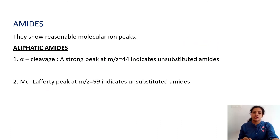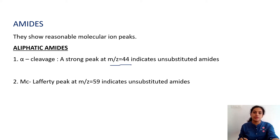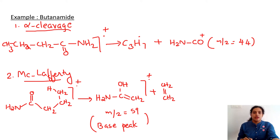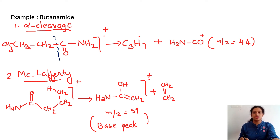Amides — there are two types, aliphatic and aromatic. They show reasonable molecular ion peaks. The main cleavages are alpha cleavage giving a peak at m/z = 44 for unsubstituted amides, and McLafferty rearrangement giving m/z = 59. Taking butanamide as an example: the alkyl group C3H7 dot is expelled as a radical, and the remaining fragment gives m/z = 44. The McLafferty rearrangement gives m/z = 59.